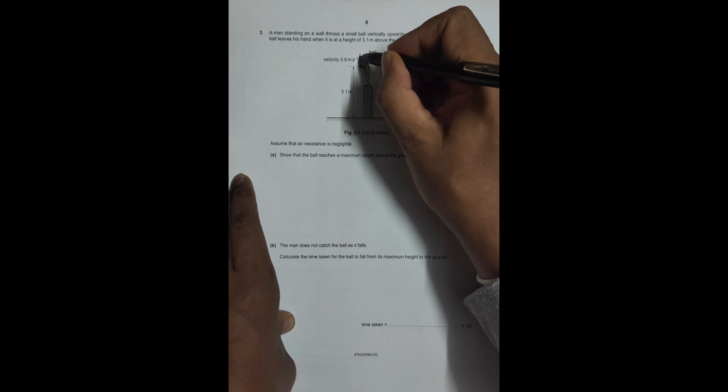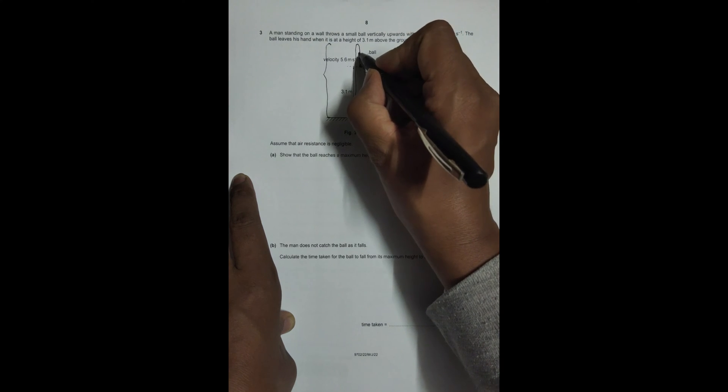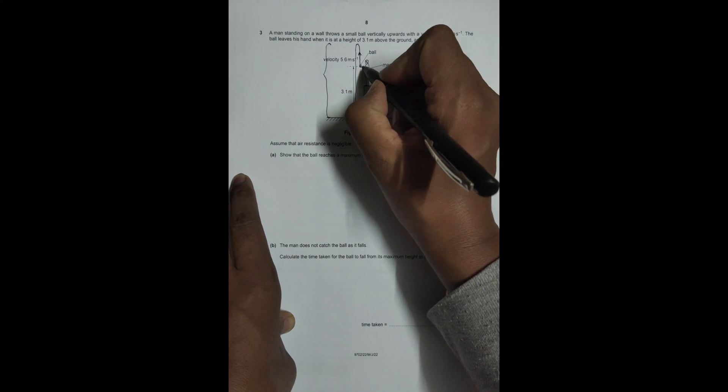So what we need to find is the person throws the ball, it goes to some height and returns, and we have to find this maximum height from the ground and prove that it's equal to 4.7. For that purpose, we have to consider this motion from here to here. For this part of motion, u is equal to 5.6 meters per second.